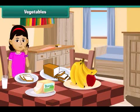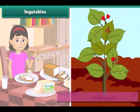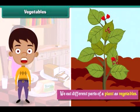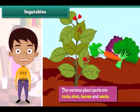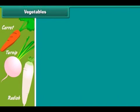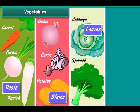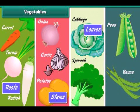We get our food from plants. The various parts of a plant are eaten as vegetables. We eat different parts of a plant: roots, stem, leaves and seeds. Carrots, turnips and radish are roots. Potatoes, onions and garlic are stems. Spinach and cabbage are leaves. Peas and beans are seeds.